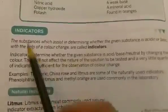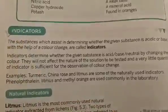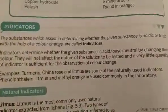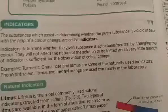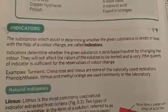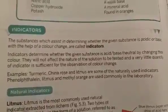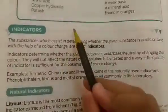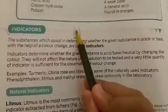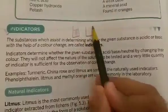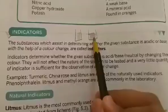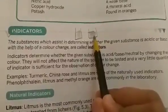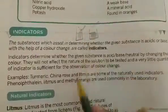Now it's time to study about indicators. Indicators are such substances that help us determine whether the given chemical is acidic or basic in nature. Suppose I give you a test tube of lemon juice and a test tube of sodium hydroxide solution — both are transparent.